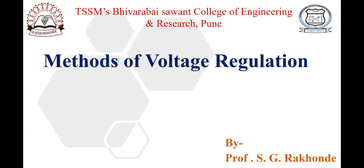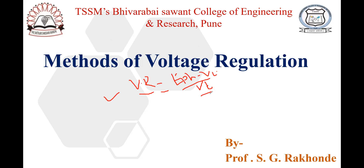Today we start the methods of voltage regulations. In methods of voltage regulations, we calculate voltage regulations. To calculate the voltage regulations, the formula is EPH minus VT upon VT. Voltage regulation is based upon the full load voltage, so we have to calculate voltage regulations by calculating EPH and VT. This is the biggest question with respect to voltage regulations.